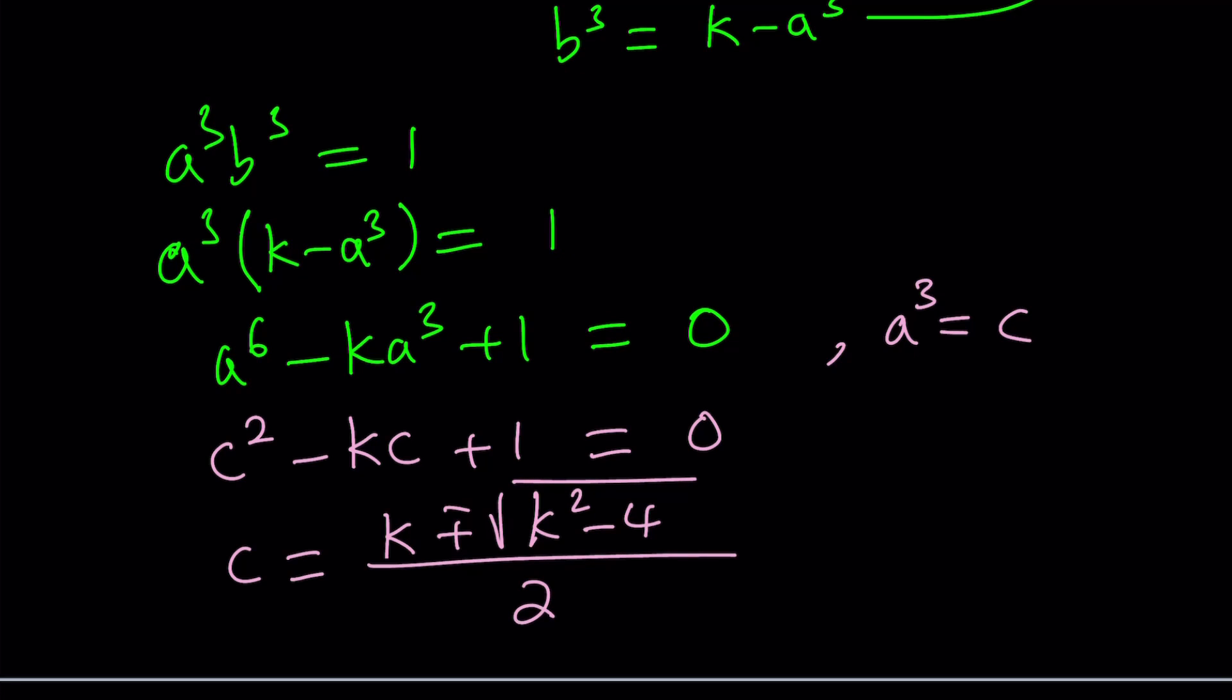So there are two values for c. I can take one of them to be a cubed, the other one to be b cubed. Because remember, c is equal to a cubed, but at the same time, it's b cubed. So a can be written as cube root of c and as well as b.